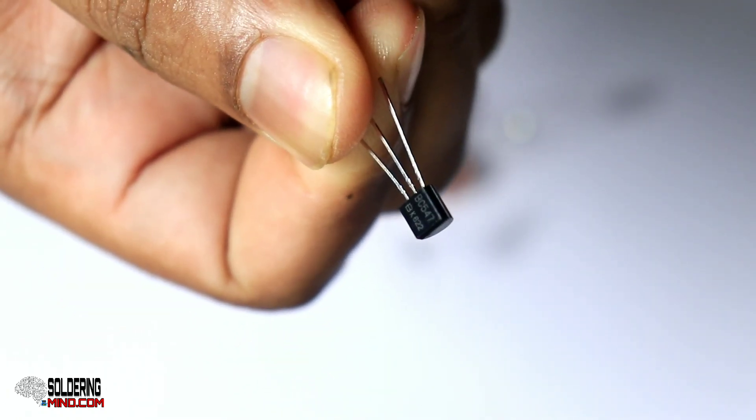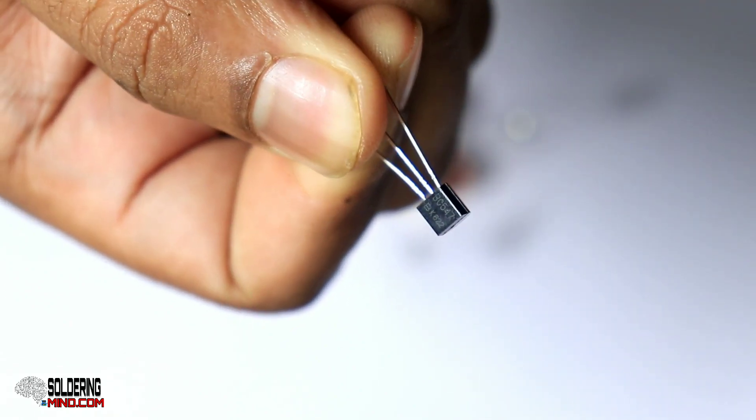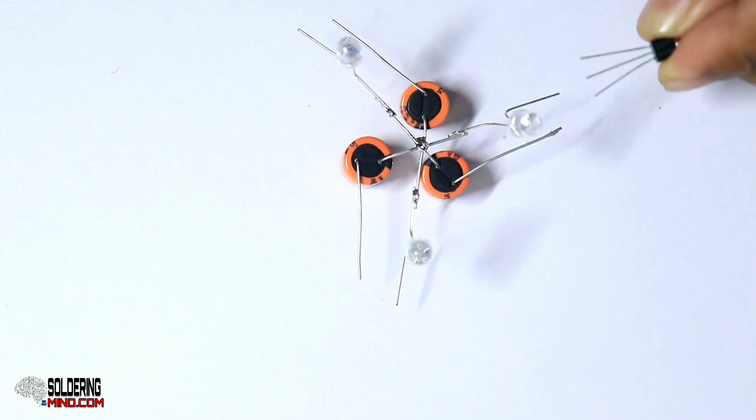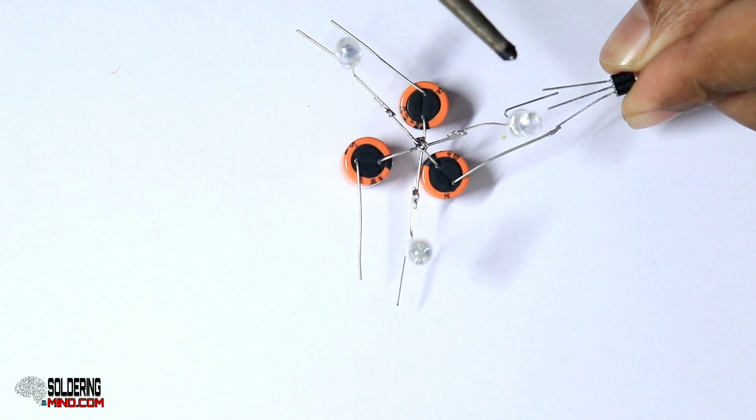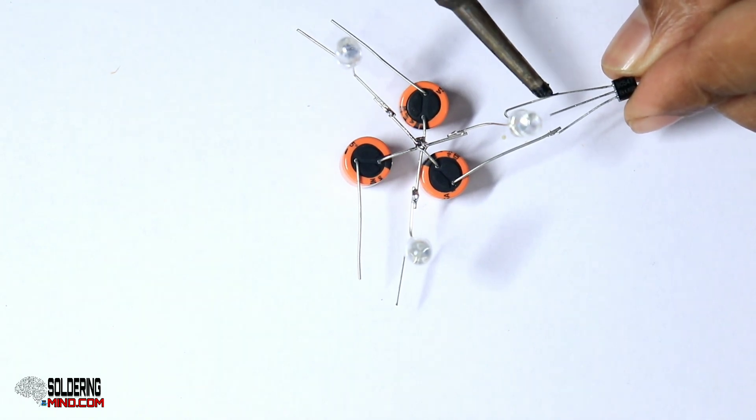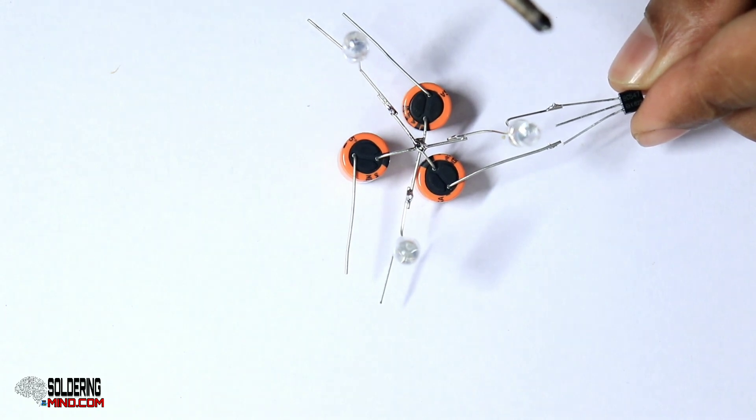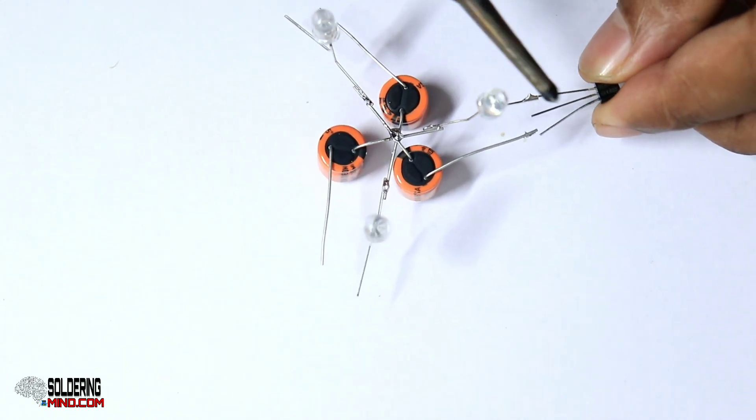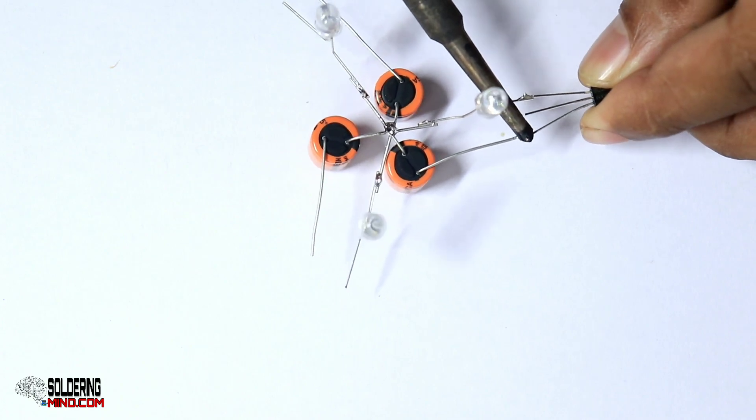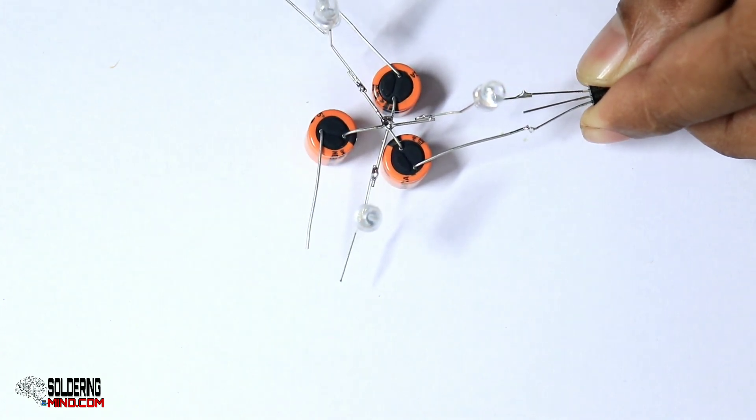Buy three BC547 transistors. Connect the first pin, that is the collector pin, to the positive leg of the LED, and connect the emitter, that means the third pin, to the positive of the capacitor. You don't need to connect the base pin to anywhere.